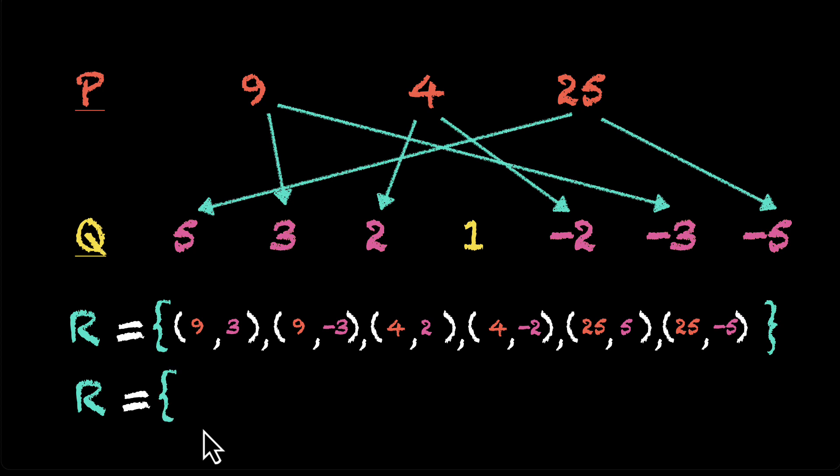So R is equal to another set. And here we have an ordered pair X and Y, such that X is equal to Y squared. Any X that you pick from the set P, you'll have a Y squared where Y is from the set Q. This means X is from set P, X belongs to P, and Y belongs to Q.